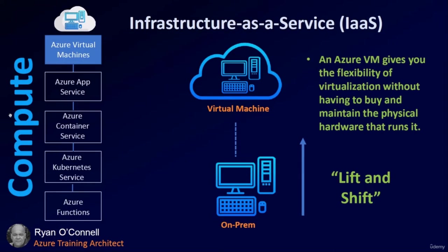Compute — Infrastructure as a Service. Azure virtual machines give you the flexibility of virtualization without having to buy or maintain any physical hardware. It's ideal for lift-and-shift from on-prem into the cloud. Virtual machines range from Windows to Linux as well as virtual appliances. You don't have to worry about the hardware, as Microsoft takes care of all of that for you.